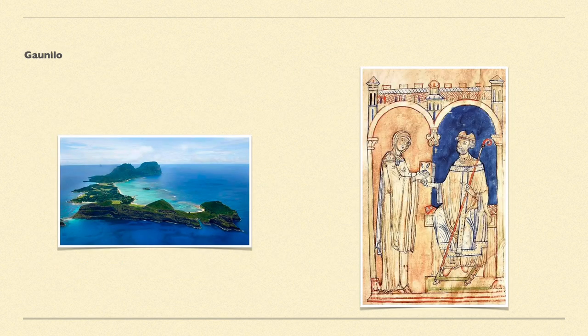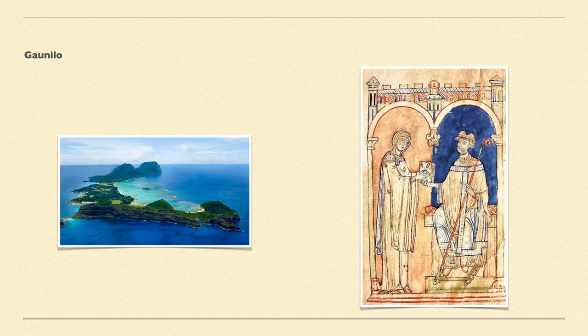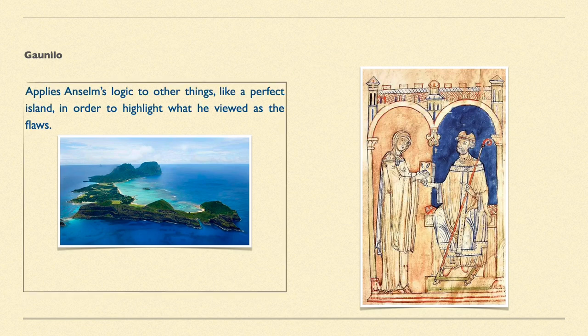Then we come to Gaunilo's response to Anselm. He chooses to use Anselm's own logic against him. Gaunilo, a monk who believed in God, didn't believe that Anselm did justice to talking about God. What he does is apply Anselm's logic to lots of other things to try and show how ridiculous and absurd his argument actually is — reductio ad absurdum. One of the things he likens it to is a perfect island, a lost island. He tries to claim that Anselm has been able to think anything — leprechauns, unicorns — and imagine anything into existence.